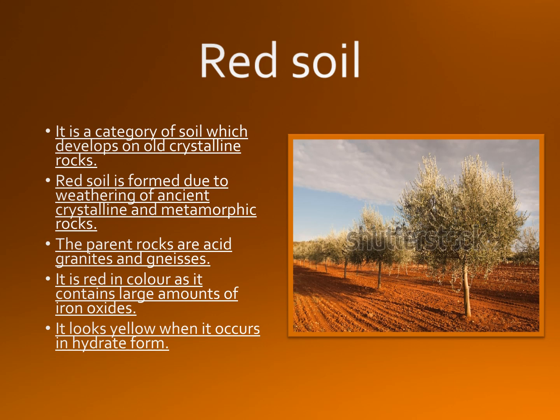It contains large amounts of iron oxide. At several places, this color slightly changes and it appears brown or gray. It looks yellow when it occurs in a hydrated form. This soil occupies an area of about 3.5 lakh square kilometers, which is about 10.6% of the total land area of the country.